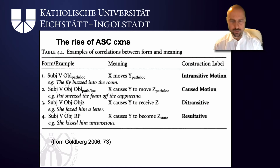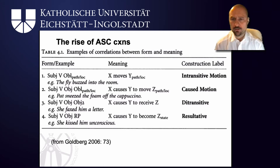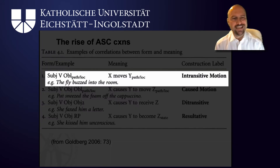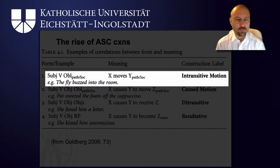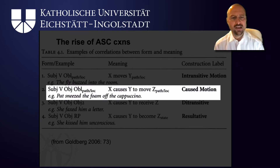Now, looking at argument structure constructions — which we've already touched upon in earlier sessions — English and many other languages encode basic human scenes through very abstract schematic slot constructions. A subject-verb-oblique construction, such as 'the fly buzzed into the room,' expresses something like 'x moves along a path.' A subject-verb-object-oblique construction, like 'Pat sneezed the foam off the cappuccino,' allows you to express 'x causes y to move along a path.' That's the caused motion construction.